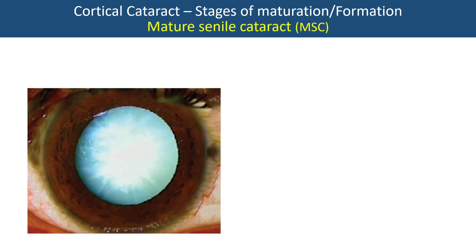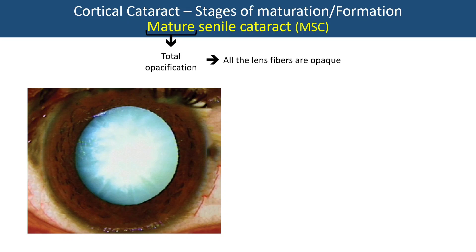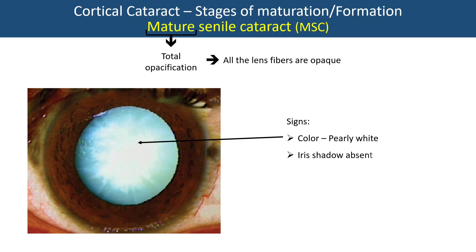The next stage in cortex maturation is mature senile cataract, also called MSC. Whereas immature had partial opacification, here there is total opacification — all fibers are opaque. The color is pearly white in appearance with no iris shadow, because there are no clear cortical fibers remaining for the formation of an iris shadow.